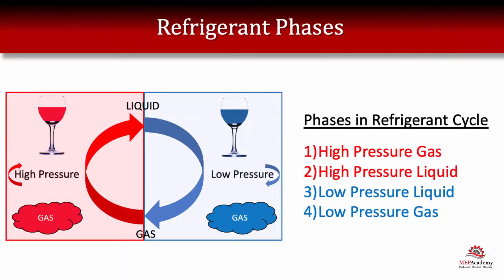There are basically only four conditions you'll find in the refrigeration cycle: you're either going to have high pressure gas, high pressure liquid, low pressure liquid, or low pressure gas.